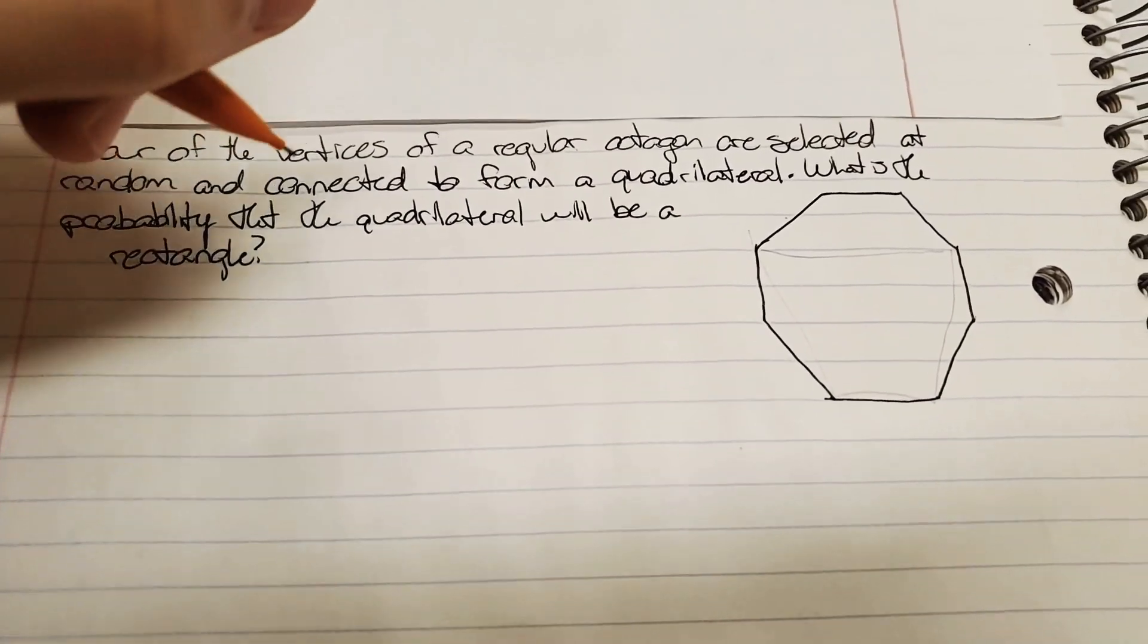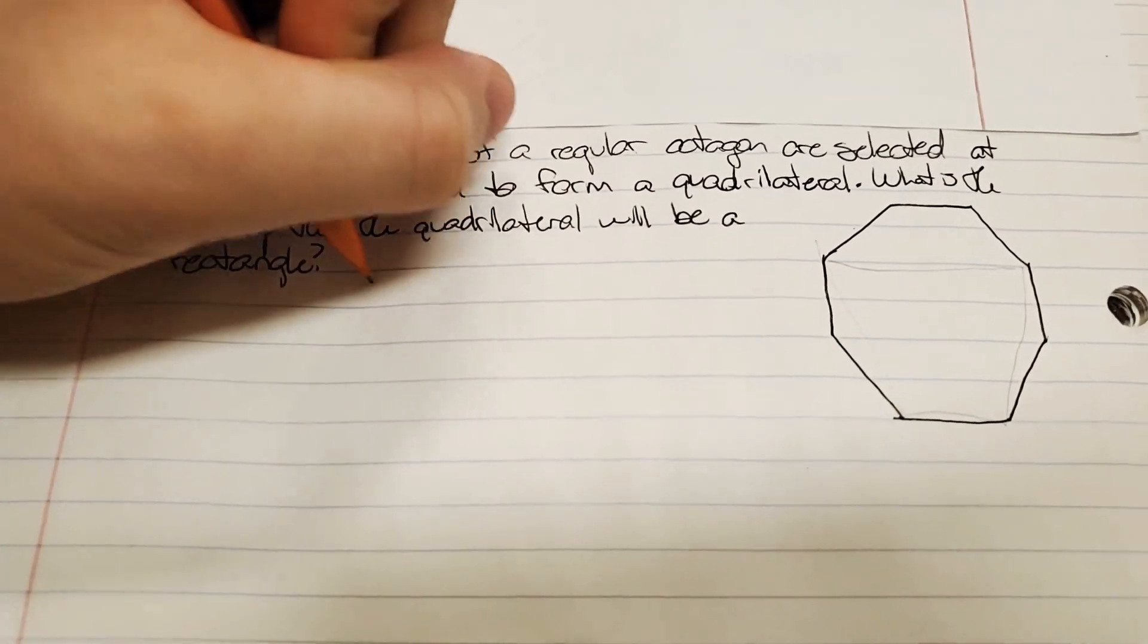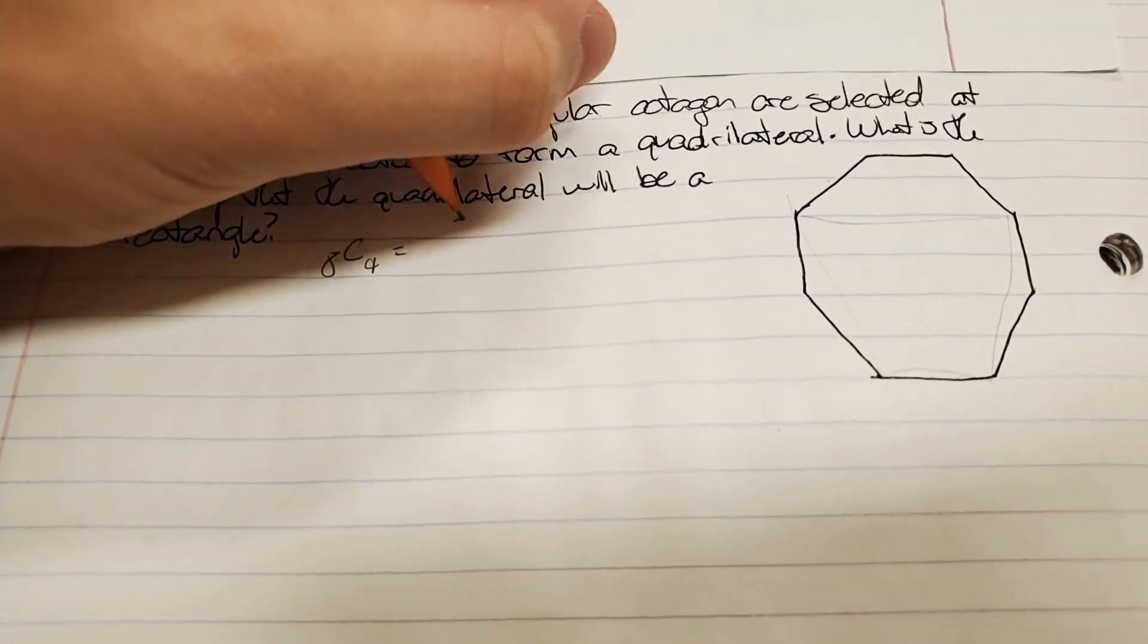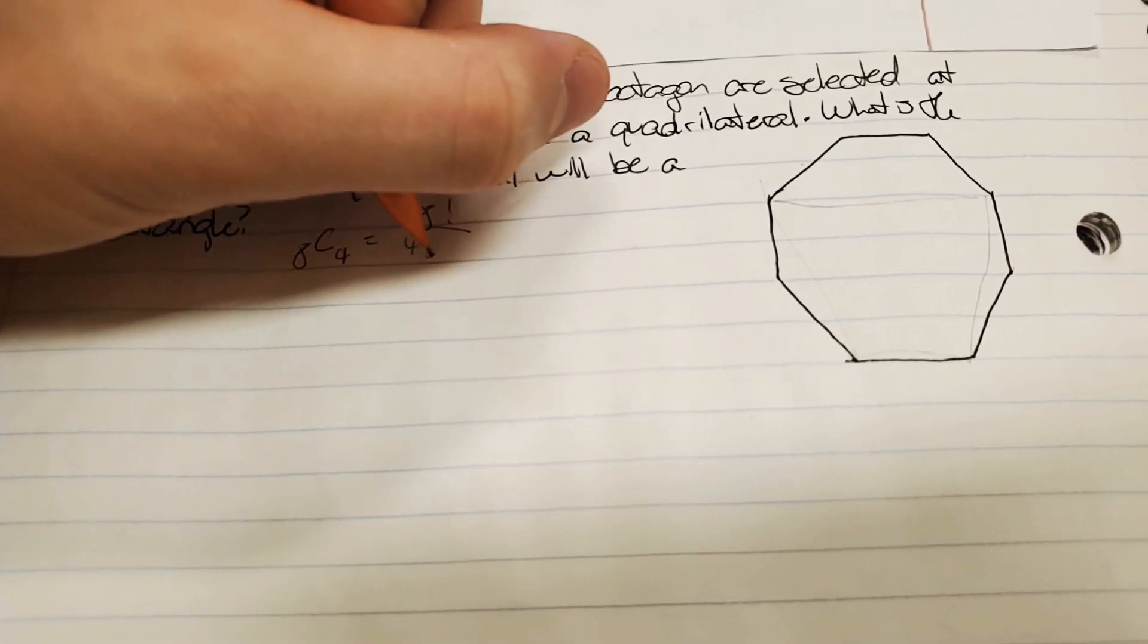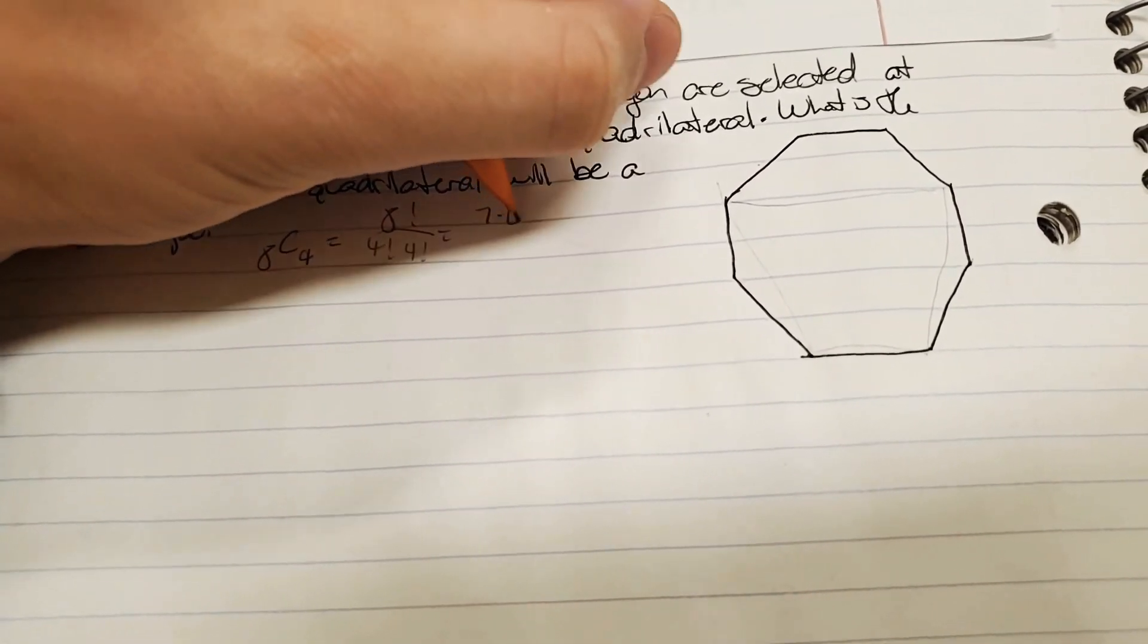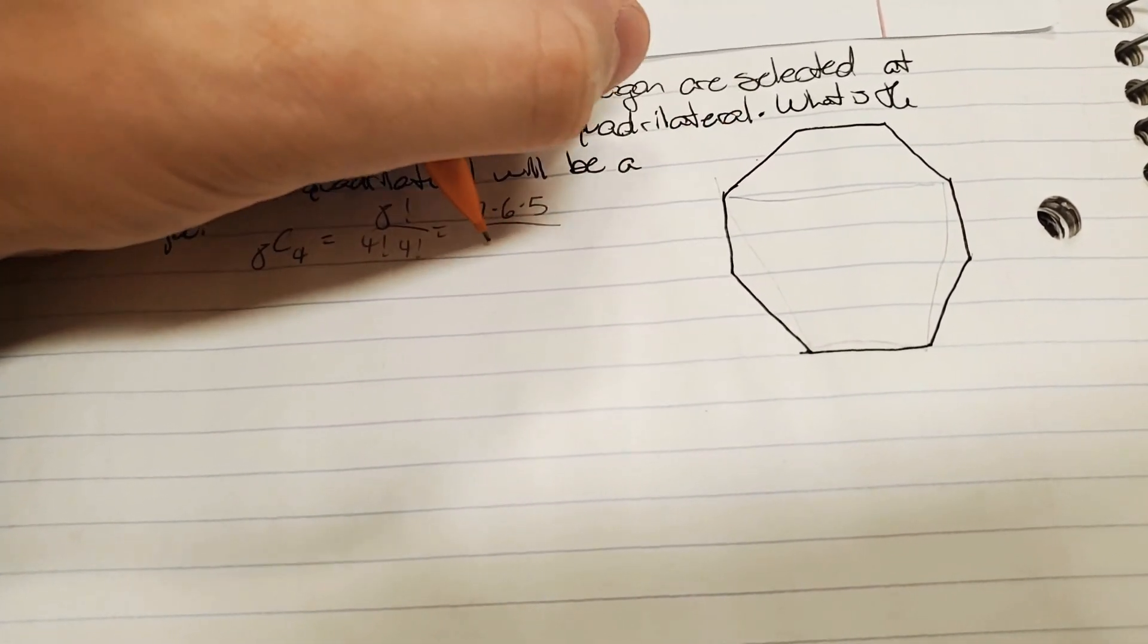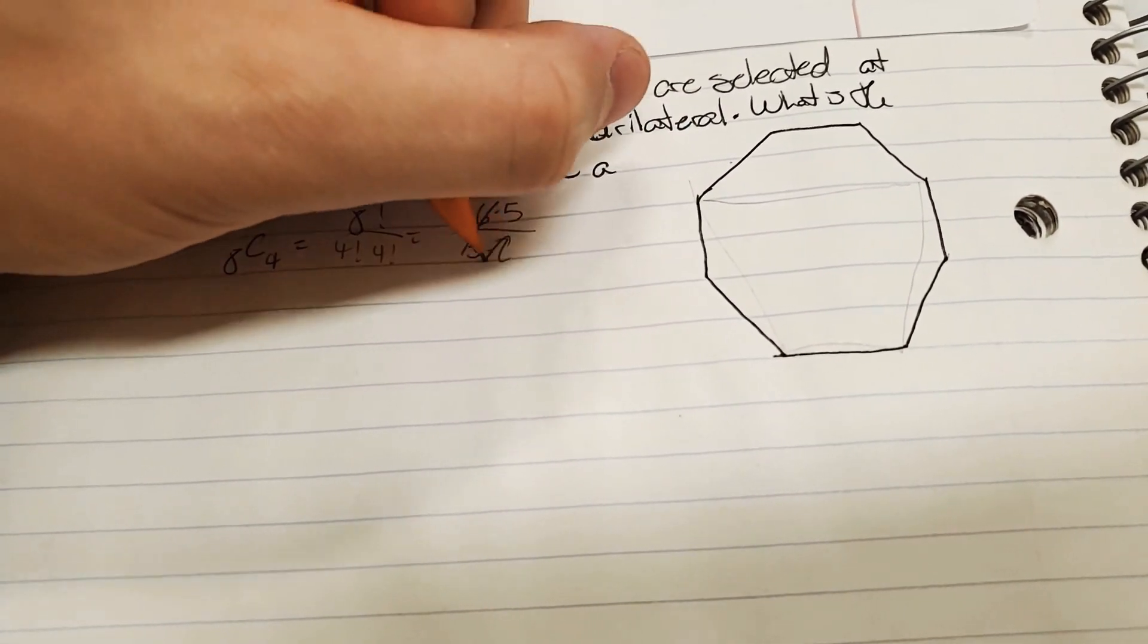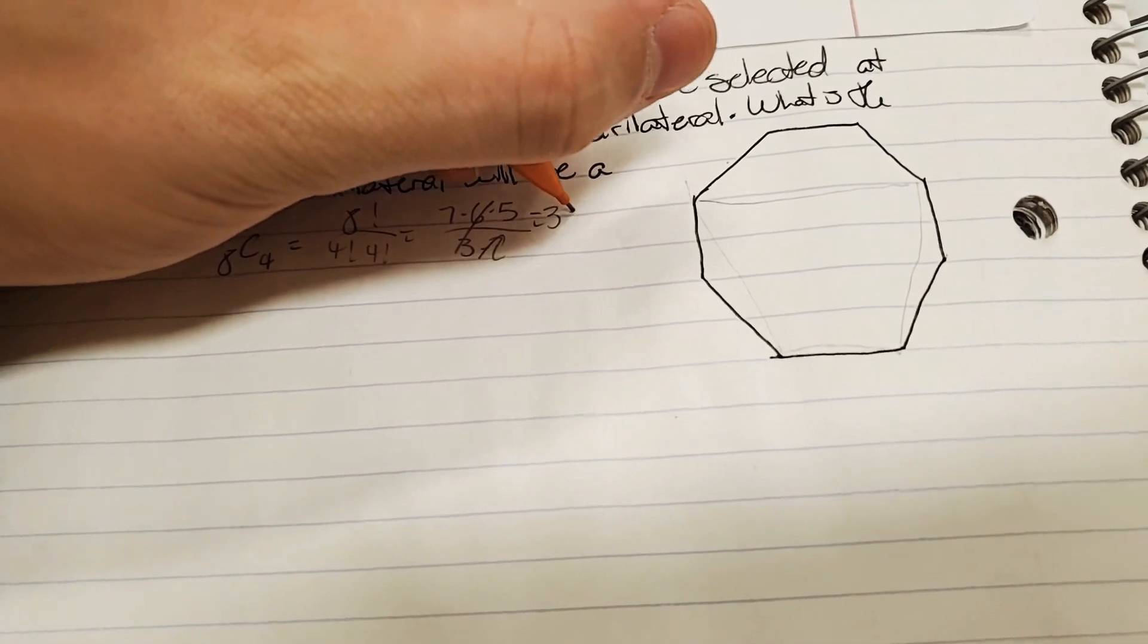So, there are going to be eight choose four, which is eight factorial over... which is going to be seven times six times five over three times two, which is thirty-five.